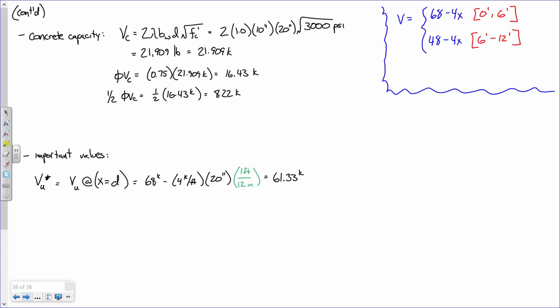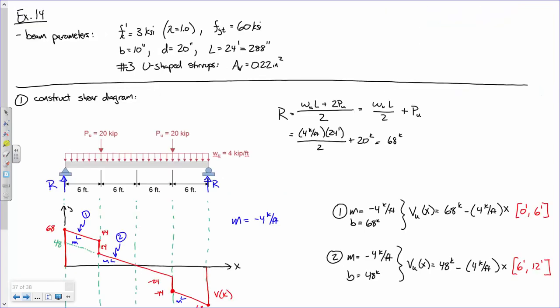The other two values we need to compute are the x-location where VU equals phi*VC and where VU equals half of phi*VC. Those values are approximately 16 kips and 8 kips. For these, we use equation two — because equation two starts at 24 and goes down to 0. The values of 16 and 8 will fall somewhere in that range. Use common sense to make sure you're computing things appropriately.